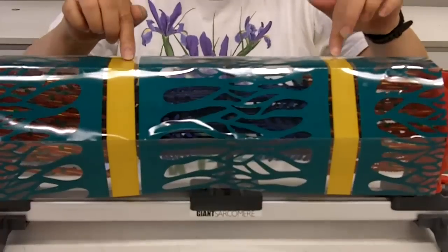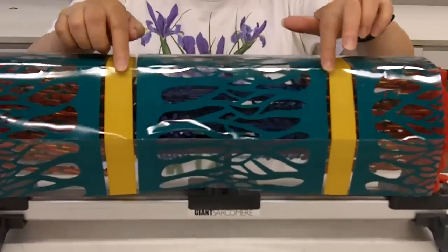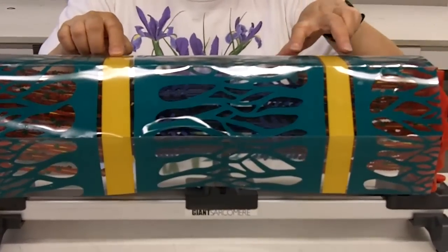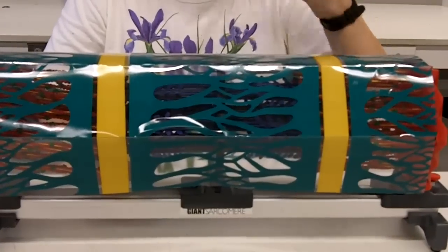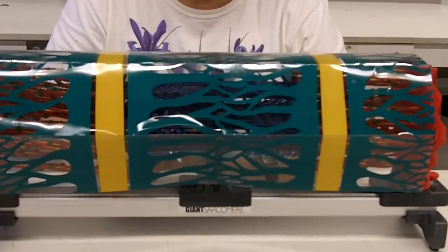The message to contract travels down through these transverse tubules, or T-tubules. The two terminal cisternae plus one T-tubule is called a triad.